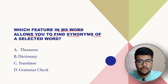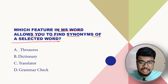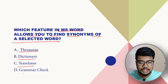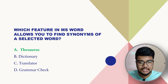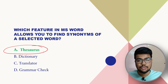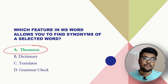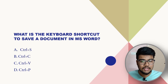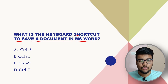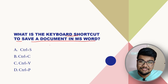Which feature in MS Word allows you to find synonyms of a selected word? The options are Thesaurus, Dictionary, Translator, or Spell Check. The answer is Thesaurus. Make a note of this question — it is a very unique question that our team found.